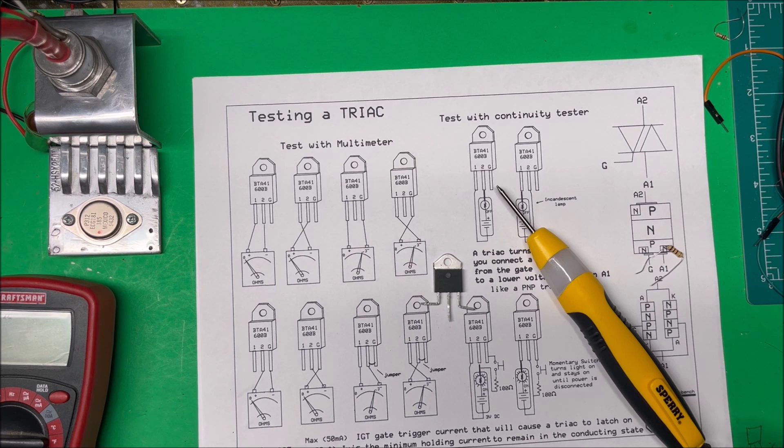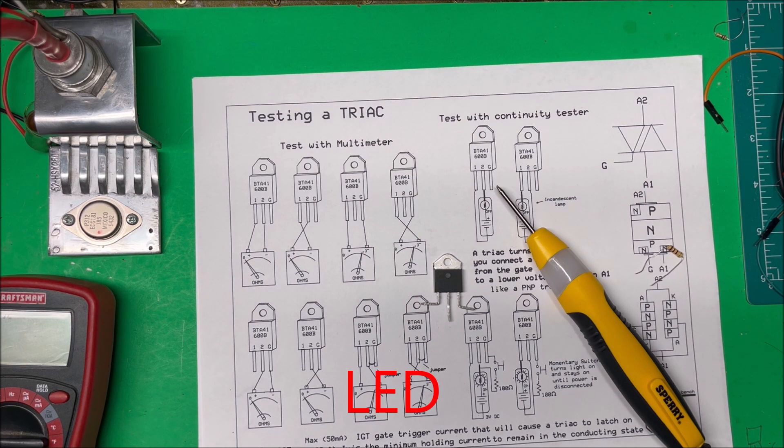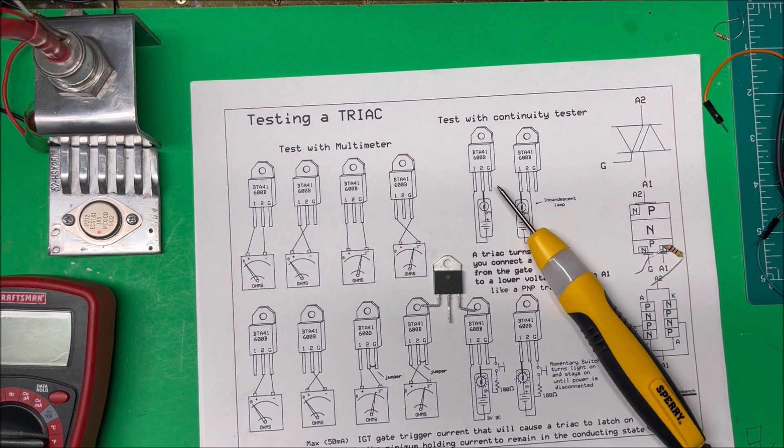This one happens to be 80 milliamps, so it probably wouldn't work if you just put a diode across it because you wouldn't be drawing your 80 milliamps. Now you want this IH to be greater than the gate trigger voltage.